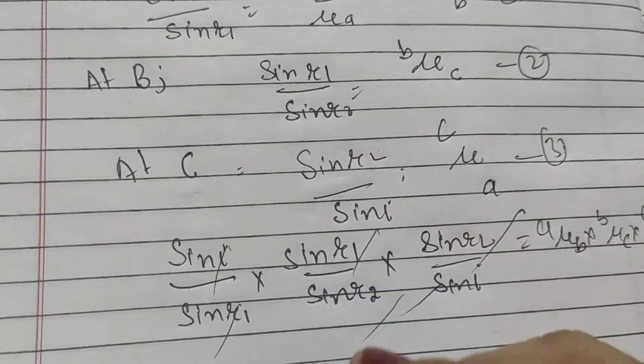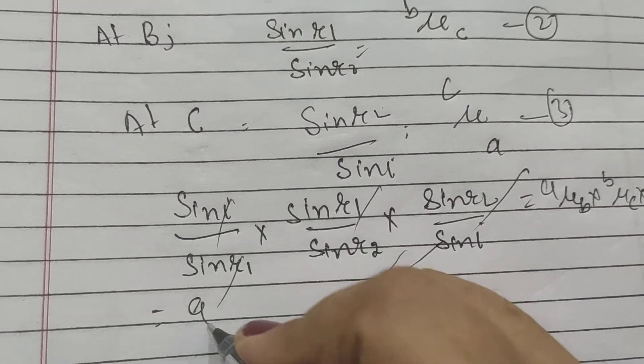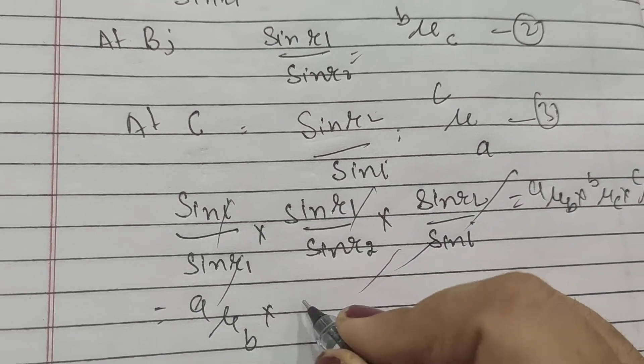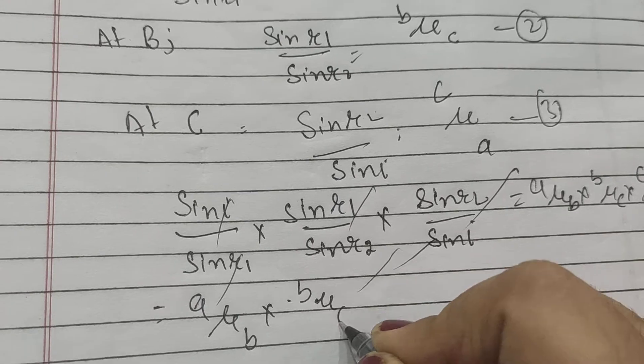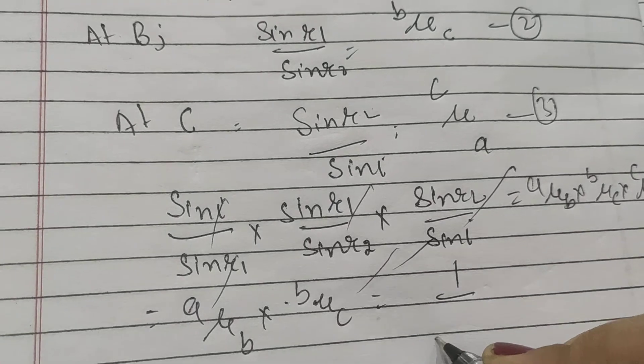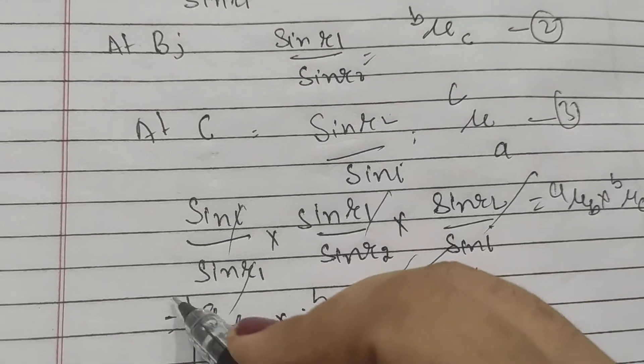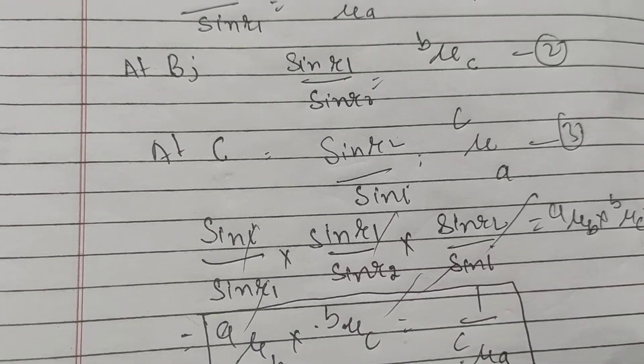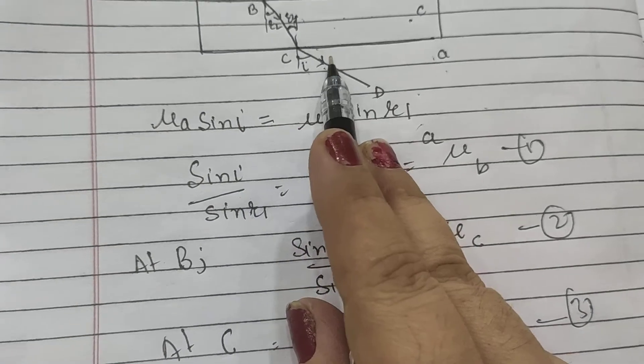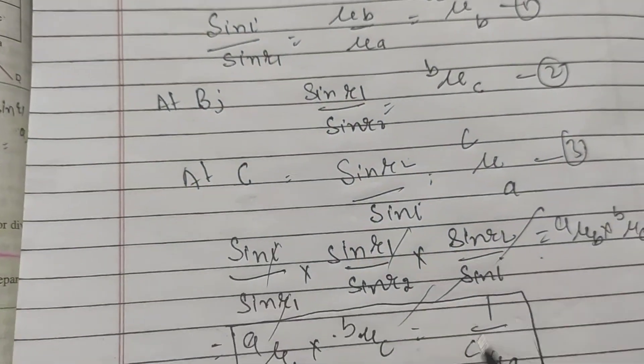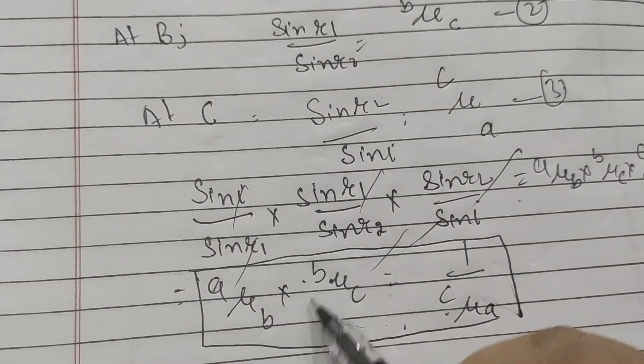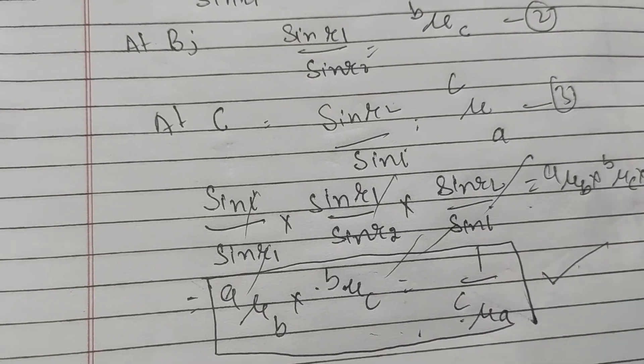All cancel out in pairs. So we will be having A mu B times B mu C is equal to 1 by C mu A. This is the relation which shows that the light is laterally displaced only in this case, and the relation between the refractive indices of three mediums is represented by this equation.